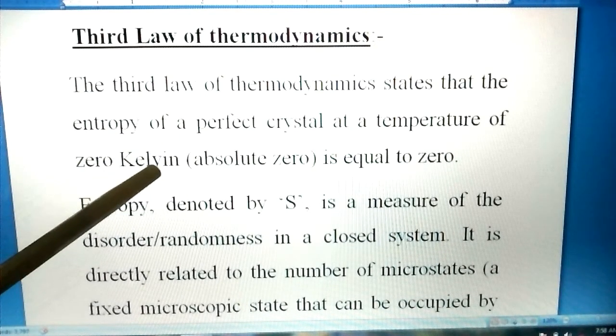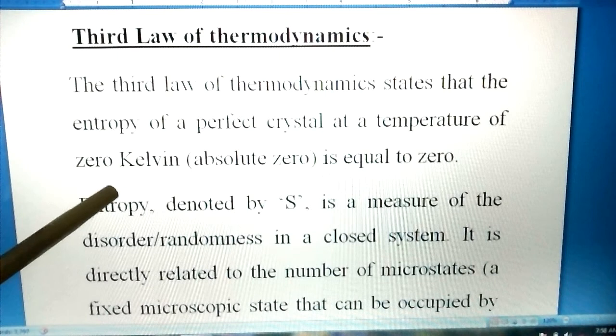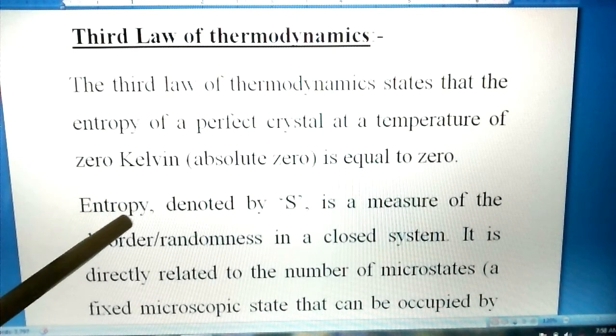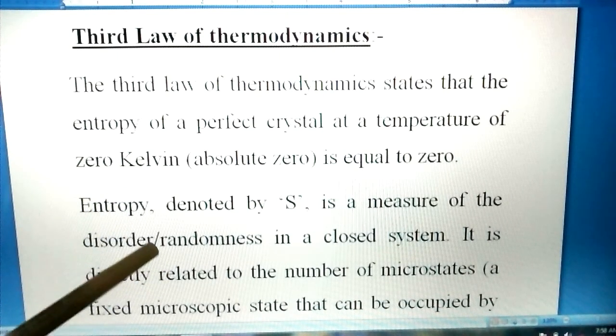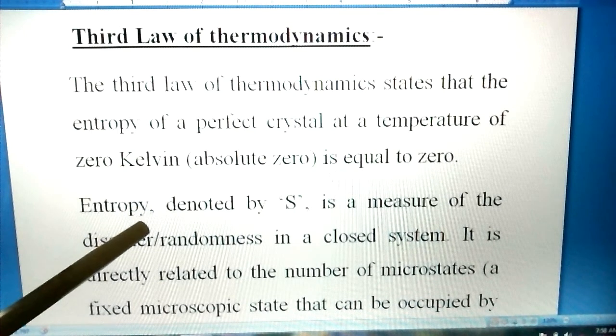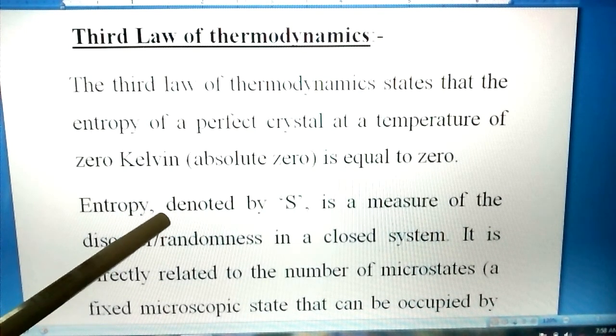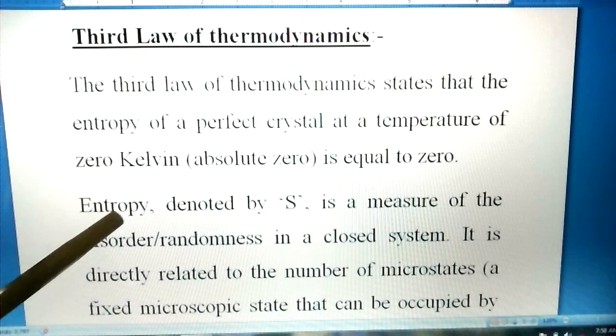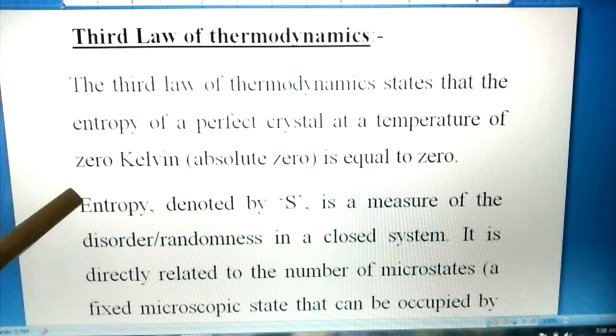Now we talk about Kelvin. Zero Kelvin is basically minus 273 degrees Celsius. That means the lowest temperature. At this temperature, the degree of randomness—the movement of the particles—is minimal.